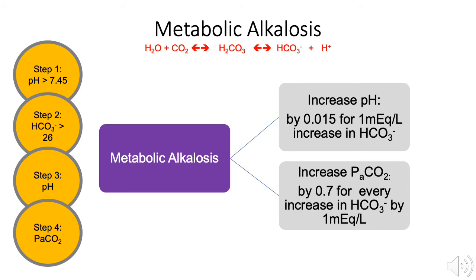In a metabolic alkalosis, the pH can be expected to change by 0.015 for every 1 mEq per liter change in the bicarbonate. The respiratory system will attempt to compensate by increasing the partial pressure of carbon dioxide by 0.7 mmHg for every 1 mEq per liter change in the bicarbonate. However, the partial pressure of carbon dioxide is unlikely to increase past 55 mmHg. If higher levels are seen, it is likely due to respiratory muscle weakness associated with marked hypokalemia.